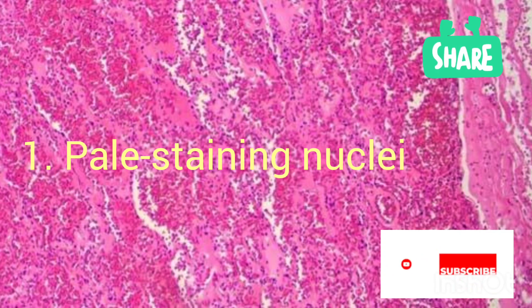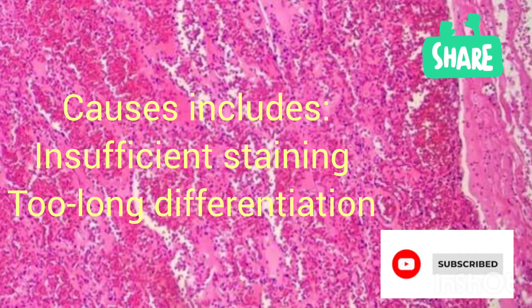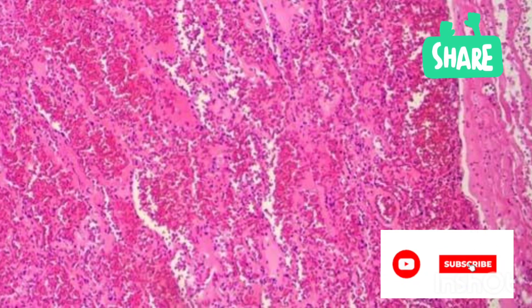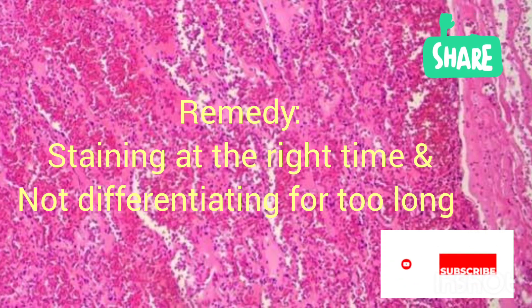One of the problems encountered during H&E staining is when the nuclei are pale. The hematoxylin stains the nuclei during H&E staining. So when the nuclei are pale, the cause could be that the hematoxylin was not left for sufficient time, or the differentiation step was too long. Differentiation is the step after hematoxylin to remove excess stain. When it's left for too long, it removes too much hematoxylin from the nuclei. So the remedy is staining the slides for the right time with hematoxylin and not leaving the differentiation step for too long.